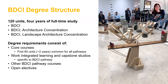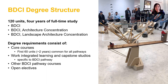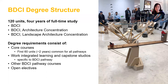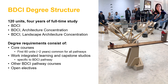Thanks Alexa. Welcome everyone. I wanted to start with the BDCI degree structure. The degree itself is 120 units with four years of full-time study. There are three different pathways: BDCI with general studies, BDCI with the architecture concentration, and BDCI with the landscape architecture concentration. Regardless of pathway, your degree requirements consist of core courses — typically the first 60 units or two years are the same for any of the three pathways.